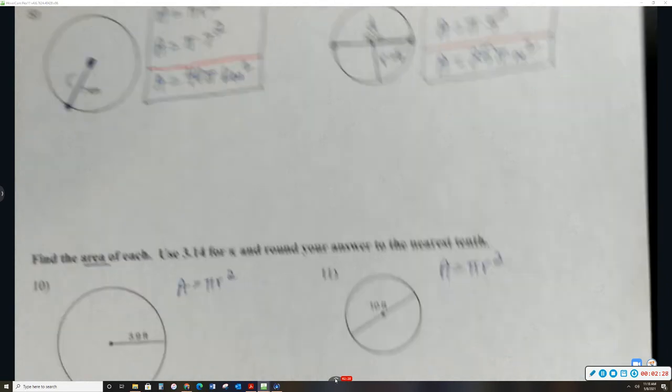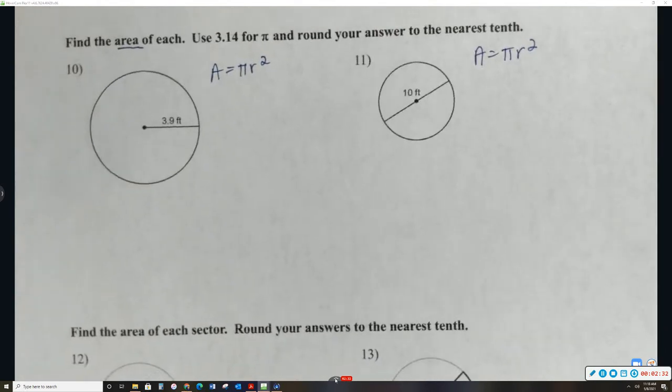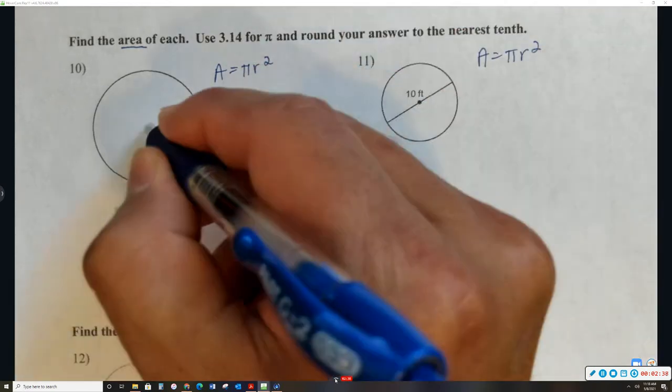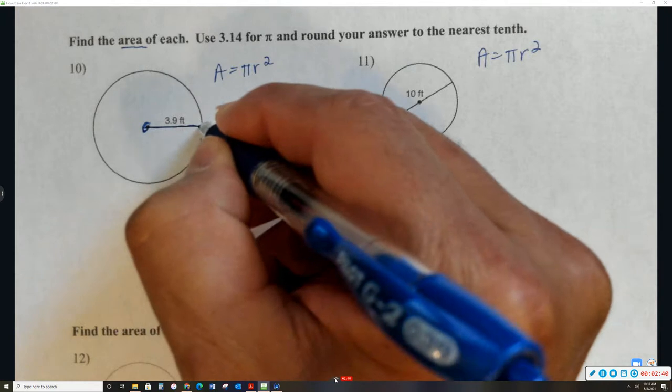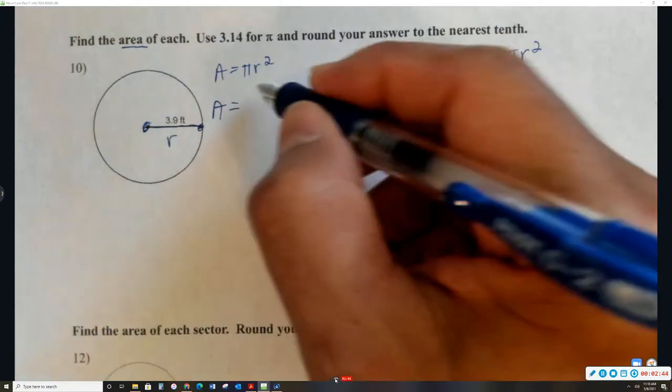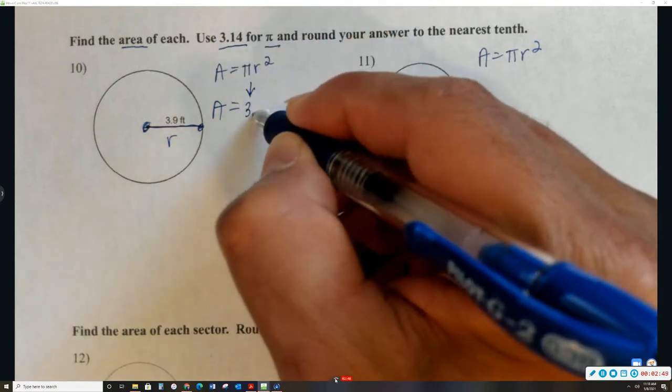So then 10 and 11. Again, 10 and 11, very similar, but instead of pi, I'm actually going to use 3.14 to find the area. So again, because this goes from the center to the edge of the circle, I know that's the radius. So again, it says use 3.14 for pi. So instead of pi, I'm going to put 3.14.